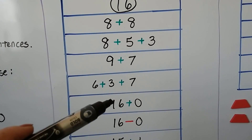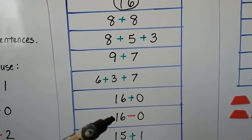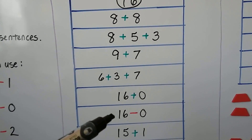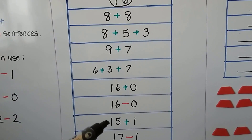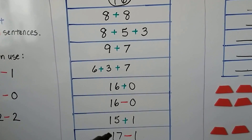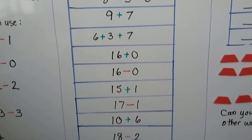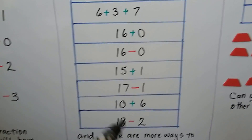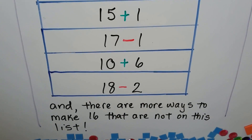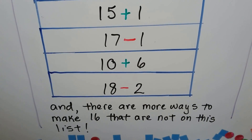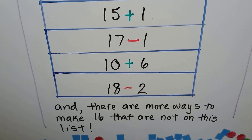We can add 16 plus 0 or subtract 16 minus 0. We could even do 15 plus 1, or 17 minus 1. And we can do 10 plus 6 or 18 minus 2. And there are many more ways to make 16 that are not on this list.